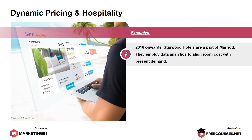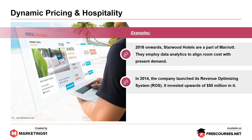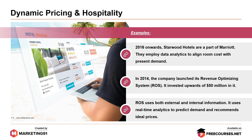From 2016 onwards, Starwood Hotels, now part of Marriott, employ data analytics to align room cost with present demand. In 2014, the company launched its revenue-optimizing system, investing upwards of $50 million in it. The revenue-optimizing system uses both external and internal information, employing real-time data analytics to predict demand and recommend ideal prices.